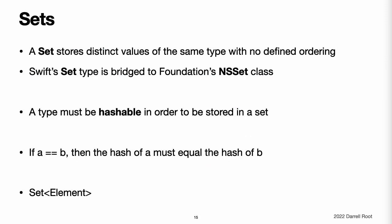Sets. A set stores distinct values of the same type in a collection with no defined ordering. You can use a set instead of an array when the order of items is not important or when you need to ensure that an item only appears once. Note: Swift's set type is bridged to Foundation's NSSet class. For more information about using set with Foundation and Cocoa, see Bridging Between Set and NSSet.